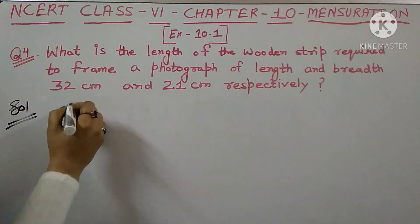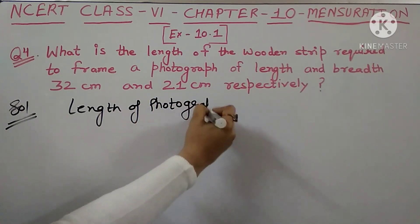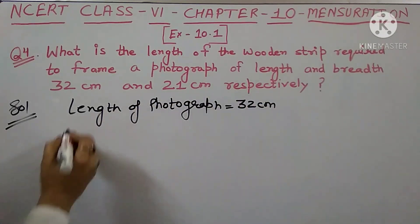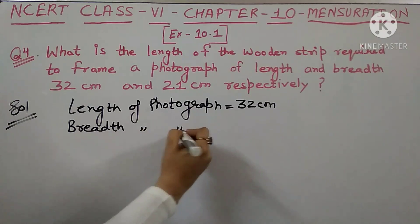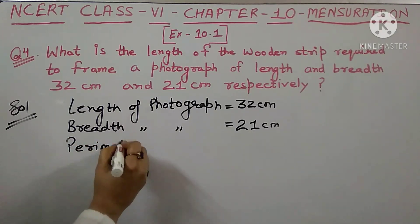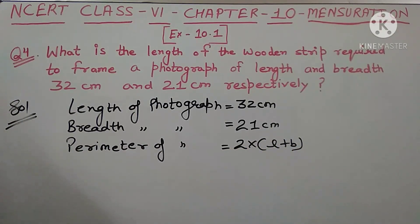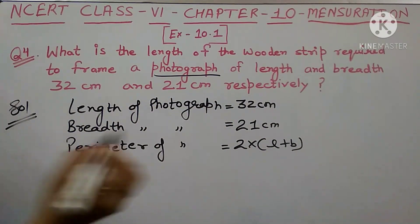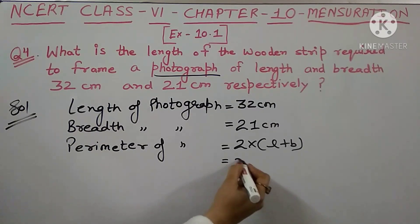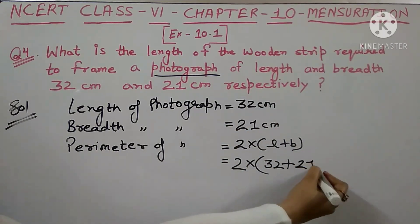First, the length of the photograph is 32 cm. The breadth of the photograph is 21 cm. Now we find the perimeter of the photograph. The perimeter of a rectangle is 2 multiplied by the bracket of length plus breadth: 2 × (32 cm + 21 cm).